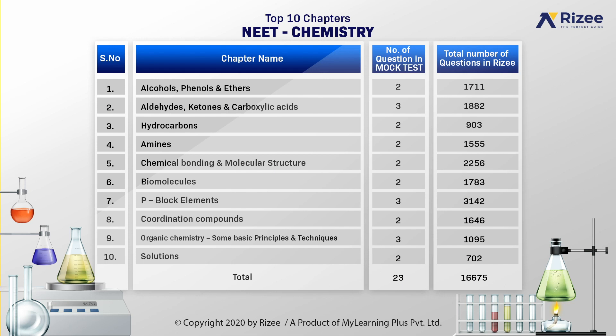P-Block Elements — 3 questions; Organic Chemistry: Some Basic Principles and Techniques — 3 questions. The total number of questions available in various complexities, both concept-wise and application-wise, from these 10 important Chemistry chapters in our Rise app are 16,675.